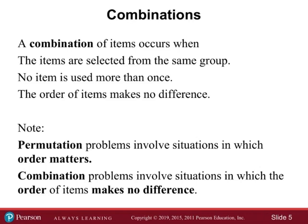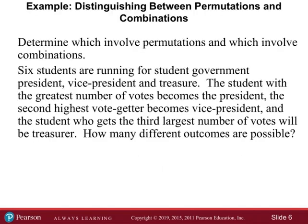Permutation is where the order matters, and combination problems involve situations where the order of the items makes no difference. So if we change the order, it doesn't matter. With permutations, the order is important and those are counted as different things. With combinations, if we change the order we consider that the same thing, so the order is not important.